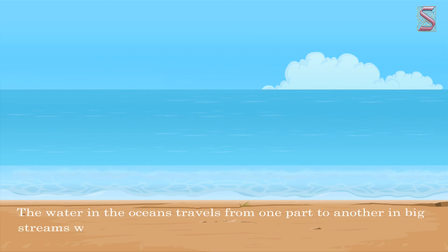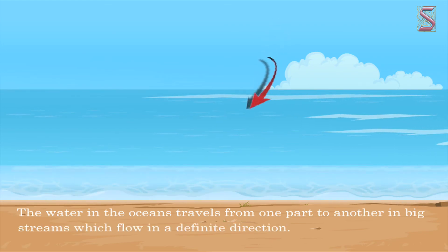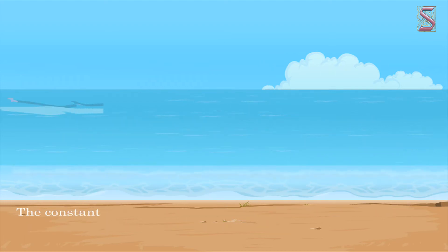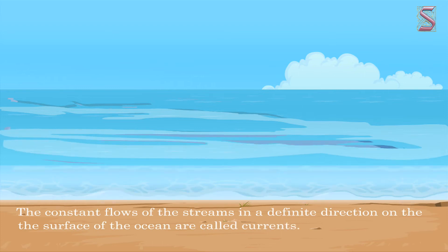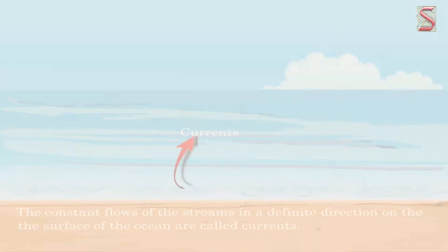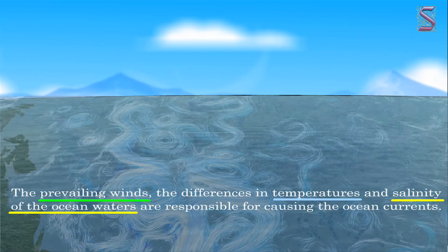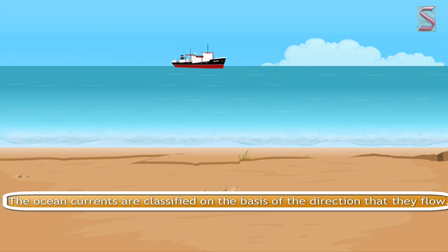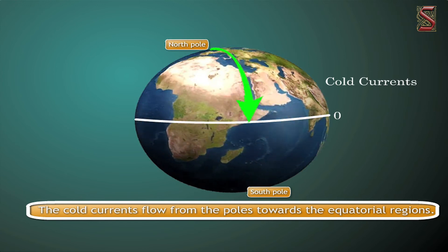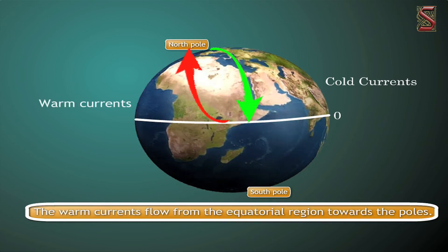Students, you must have also heard about the currents. The water in the oceans travels from one part to another in big streams which flow in a definite direction. The constant flows of streams in a definite direction on the surface are called ocean currents. Can you guess how these currents are formed? The prevailing winds, the differences in temperatures and salinity of the ocean waters are responsible for causing the ocean currents. These ocean currents are generally classified as two types: warm currents and cold currents. The cold currents flow from the poles towards the equatorial regions, while warm currents flow from the equatorial regions towards the poles.